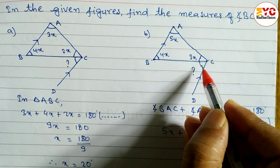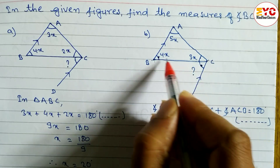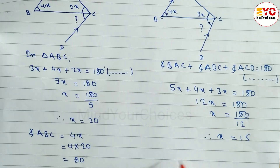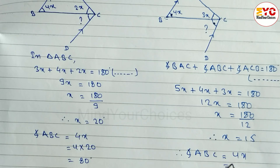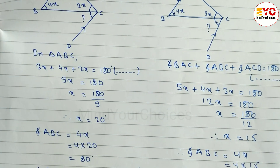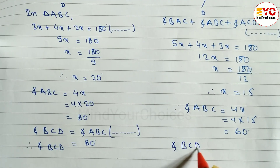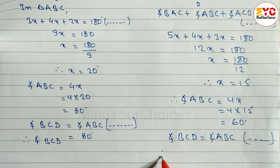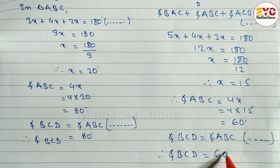Now, to find angle BCD, we find angle ABC first. Angle ABC = 4x = 4 × 15 = 60 degrees. These two angles are in an alternate angle relationship because the two sides are parallel — you can also see the Z shape. Therefore, angle BCD = angle ABC = 60 degrees. That is the answer.